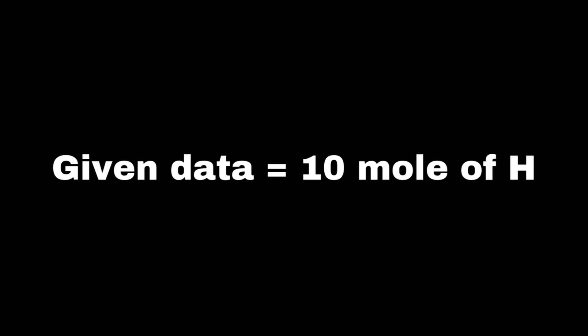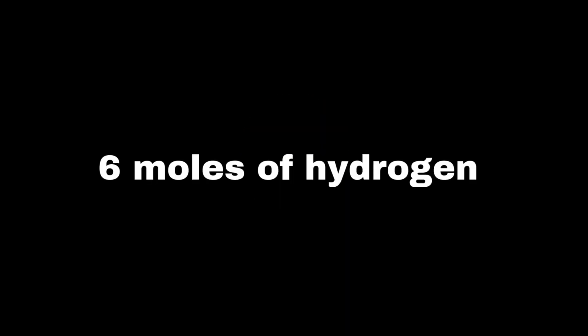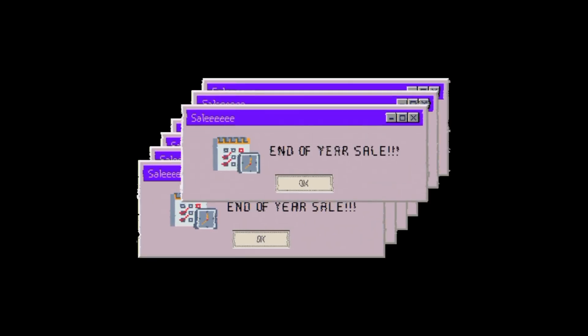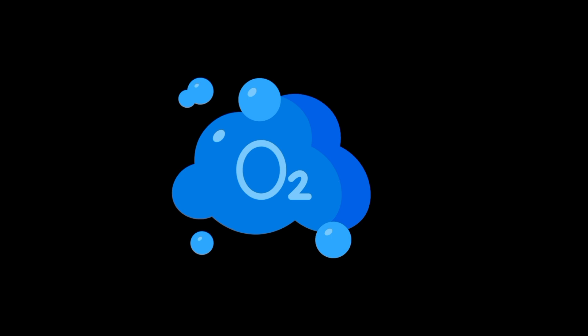For example, imagine you are making water with hydrogen and oxygen. Let's say you have 10 moles of hydrogen and only 3 moles of oxygen. According to the balanced equation, you need 2 moles of hydrogen for every 1 mole of oxygen. With 3 moles of oxygen, you would need 6 moles of hydrogen to completely react with it. Since you have 10 moles of hydrogen, you will have extra hydrogen left over after the oxygen is used up. In this case, oxygen is the limiting reactant because it runs out first and limits the amount of water you can make. Once the oxygen is used up, no more water can form, even though hydrogen is still available.